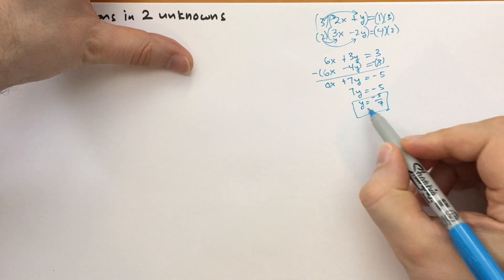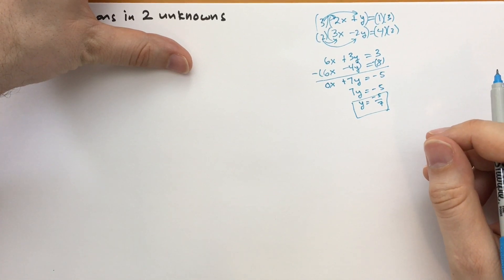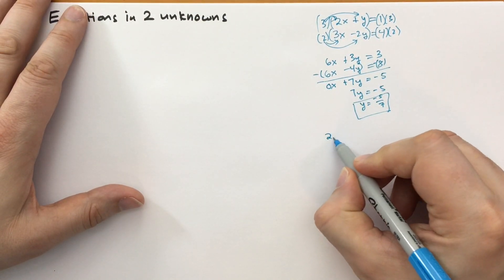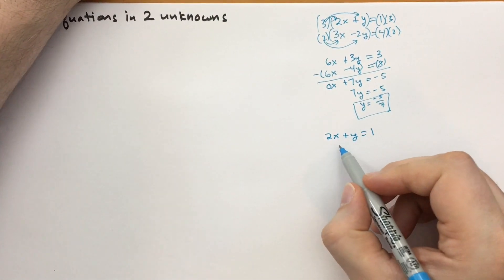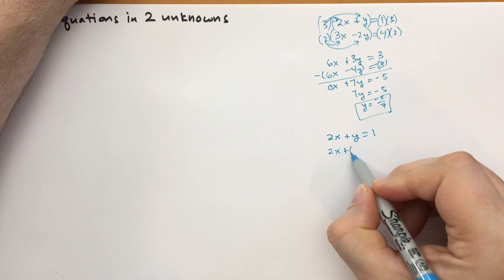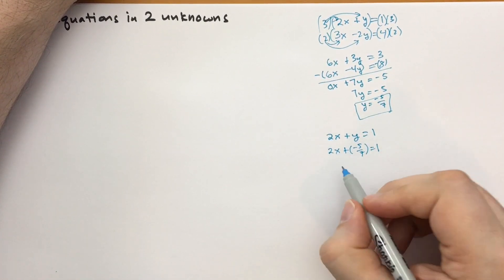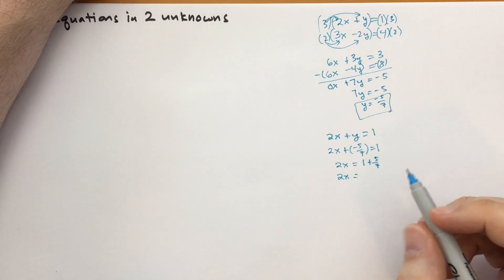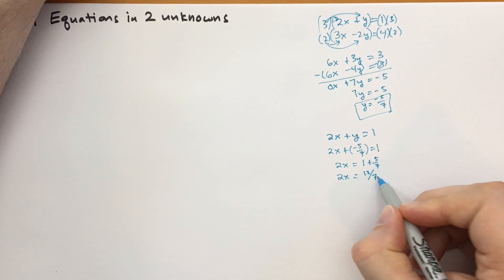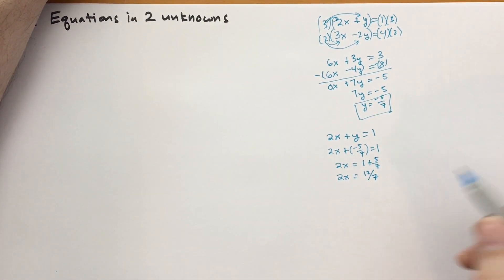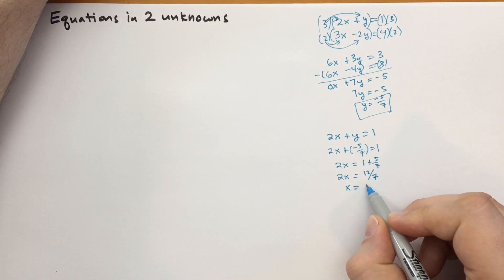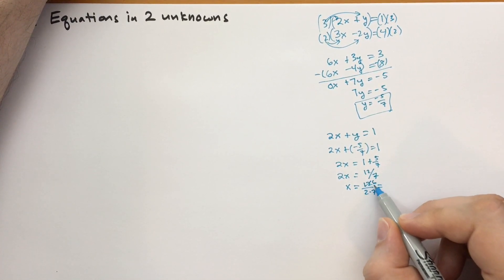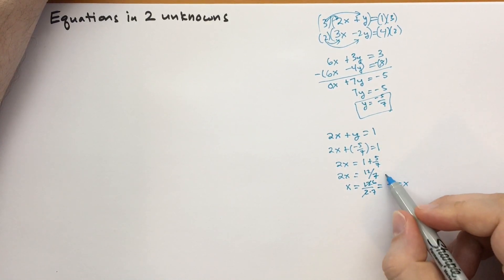Now that we know what y is, we can plug this back into one of the original equations — let's use the first one. So 2x plus y equals 1 becomes 2x plus minus 5 sevenths equals 1. Moving the minus 5 sevenths to the other side gives 1 plus 5 sevenths, which is 12 sevenths, since 1 is 7 sevenths and 7 plus 5 is 12. Dividing by 2, we get 12 over 2 times 7, and canceling the common factor of 2, x equals 6 sevenths.